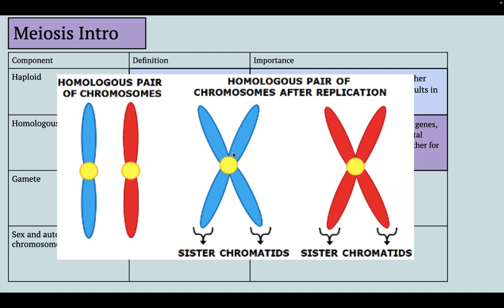When we look at homologous chromosomes, here's paternal and here's maternal — we compare the genes and alleles on these chromosomes to better understand what traits you have. We still call duplicated chromosomes sister chromatids. This is one chromosome duplicated with sister chromatids, and this is another duplicated chromosome with two sister chromatids — giving us four chromatids, two chromosomes, with two copies of each chromosome.